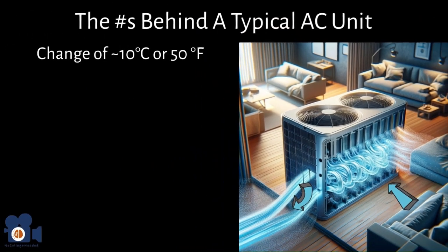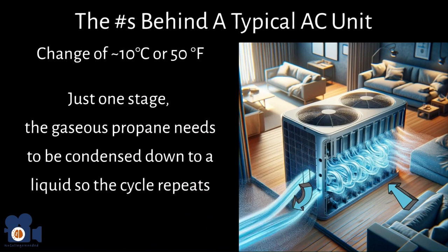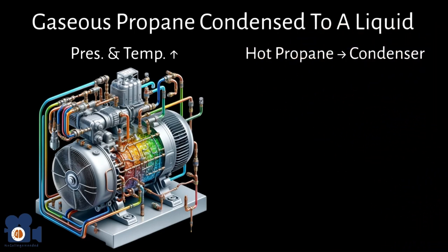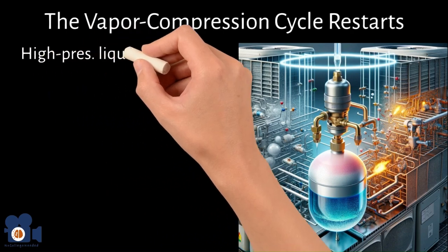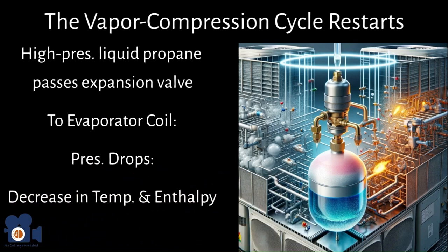Keep in mind this is just one stage. The gaseous propane needs to be condensed back to liquid so the cycle repeats. The vaporized propane is compressed by a compressor, increasing its pressure and temperature, which the AC unit needs to release. It sends the hot propane to a condenser where it transfers its heat to air pumped outside — which is why AC units discharge hot air and feel warm. The high-pressure liquid propane then passes through an expansion valve back to the evaporator coil, where pressure drops suddenly, decreasing temperature and enthalpy to restart the cooling process.